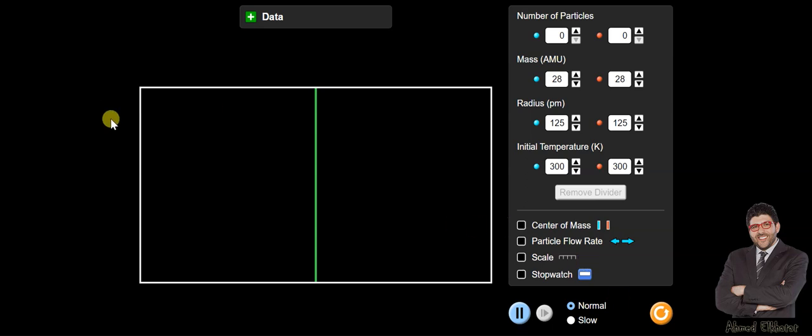So suppose that we have a system that has blue particles and red particles and we want to simulate first the equimolar diffusion. For equimolar diffusion, as you know, the net flux will be zero.